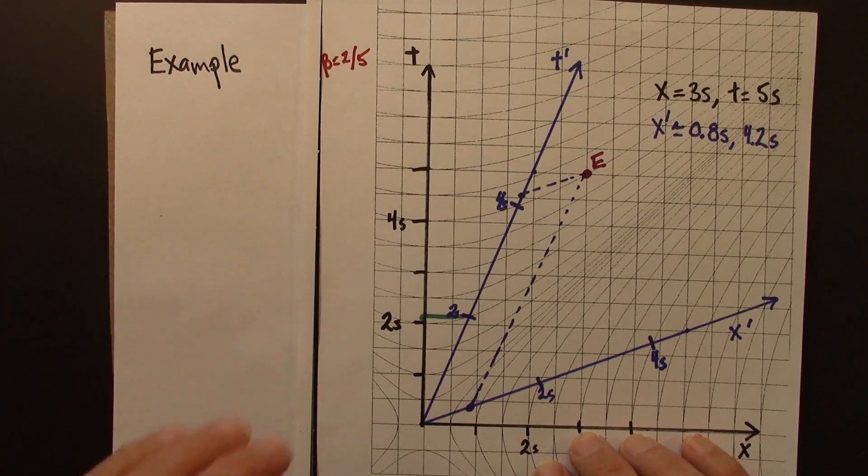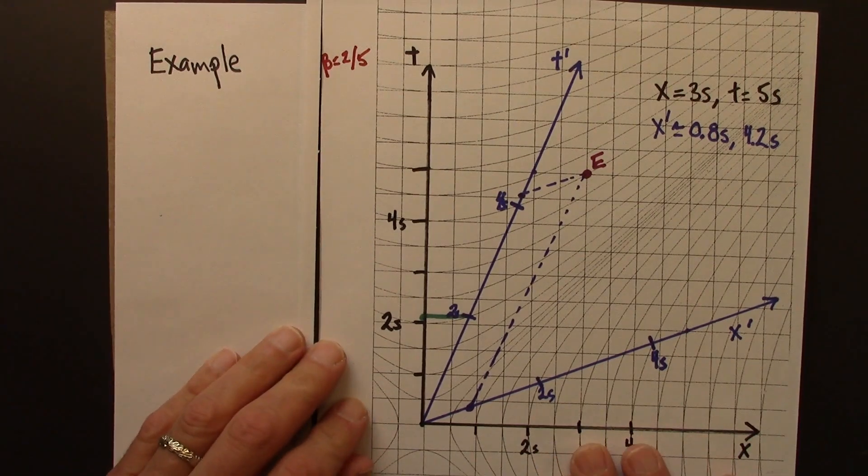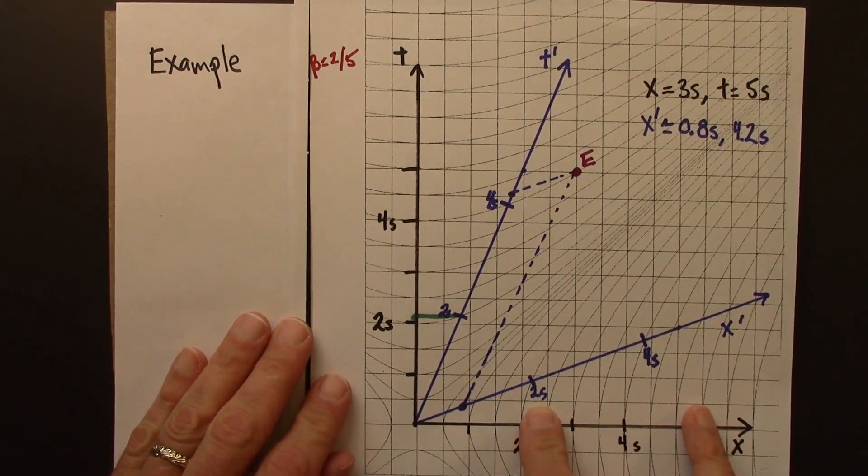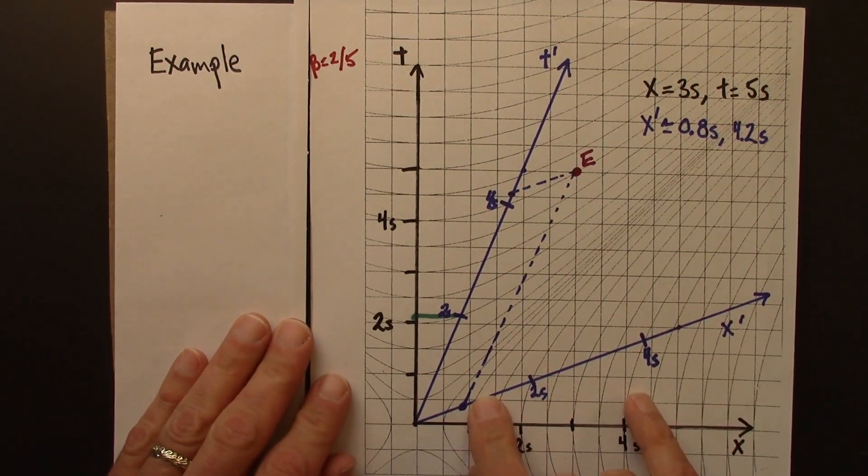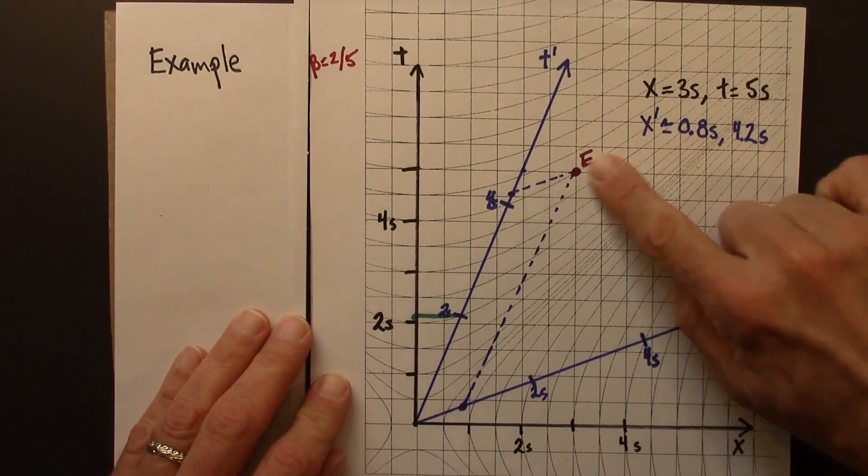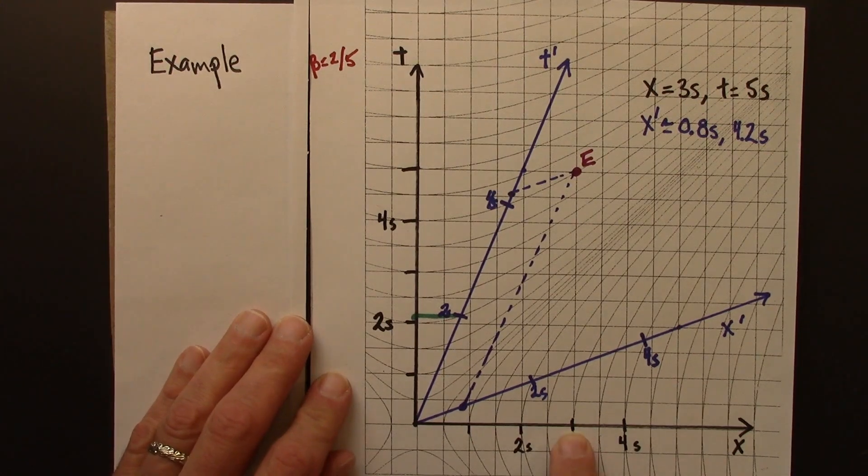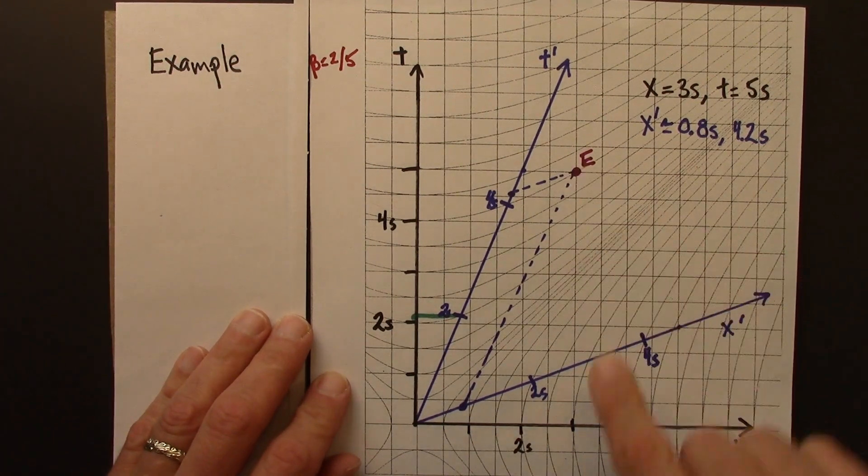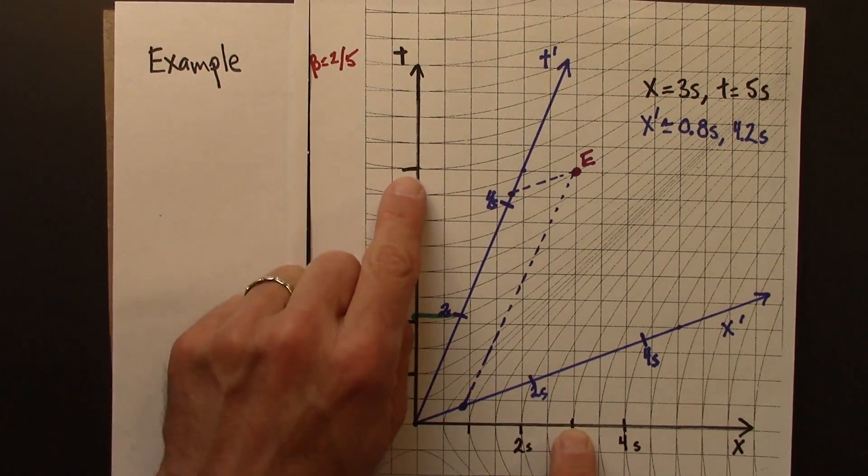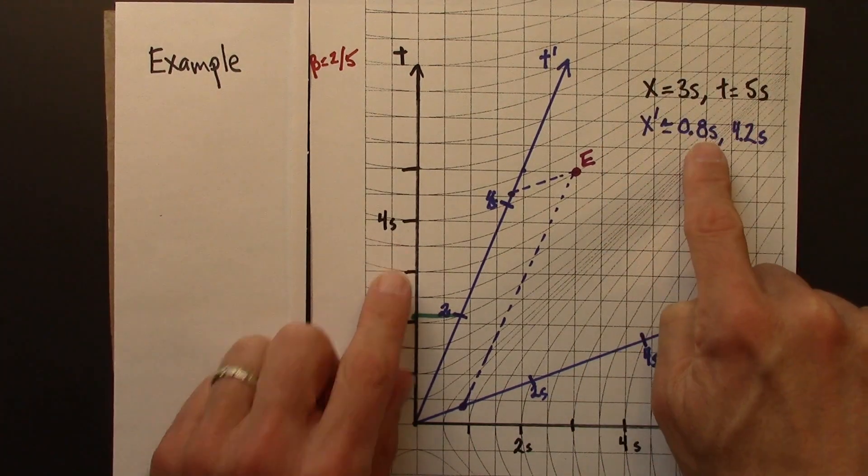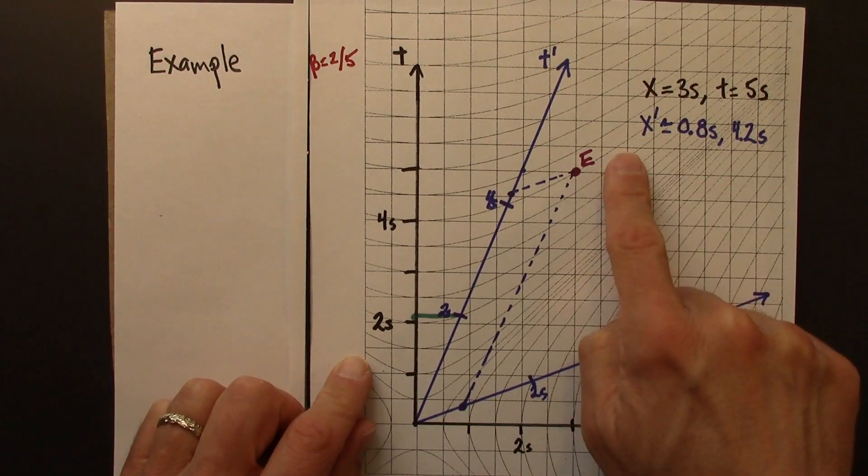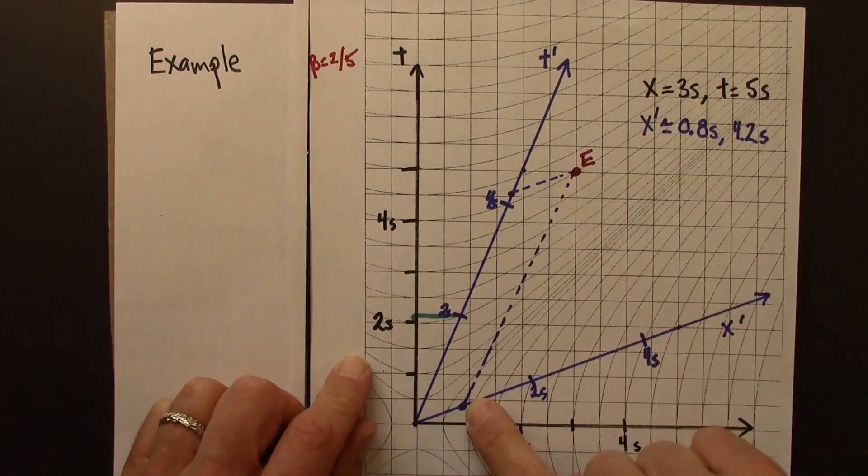So let's work through an example using the Lorentz transformation. I'm going to return to this particular example of a two-observer diagram that we used earlier in this unit. There we had an event E in spacetime, and we read directly off of the graph the spacetime coordinates in the unprimed frame: x equals 3, t equals 5. And then we estimated the primed coordinate values by drawing parallel lines.